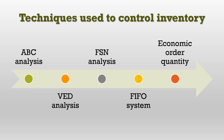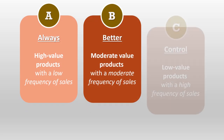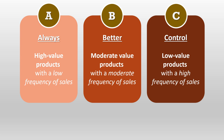Let's look at the first method: ABC analysis. In ABC analysis, A stands for Always, B for Better, and C stands for Control. We distribute drugs into three different categories — A, B, and C. Category A contains high-value products with a low frequency of sales. Category B contains moderate-value products with a moderate frequency of sales. Category C contains low-value products with a high frequency of sales. It is the duty of pharmacists to distribute the hospital pharmacy budget to procure all three categories so that all items are available inside the hospital pharmacy.